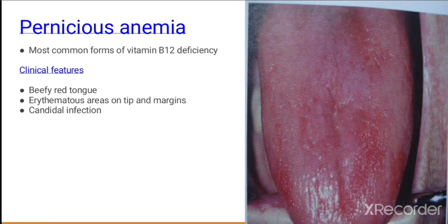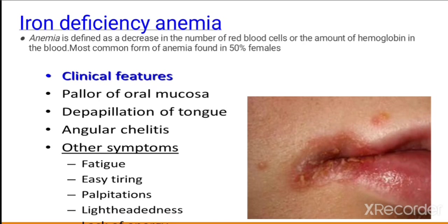Pernicious anemia is the most common form of vitamin B12 deficiency, in which the tongue appears bright red. Erythematous areas develop on the tip and margins of the tongue, and also occur in candidal infection. In iron deficiency anemia, there is pallor of oral mucosa, deep papillation of the tongue, angular cheilitis, and other symptoms like fatigue, easy tiring, palpitations, lightheadedness, and lack of energy.